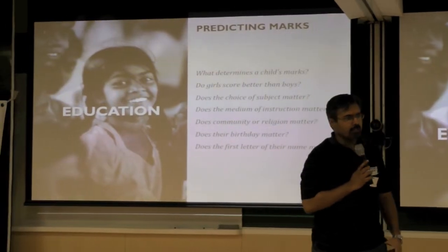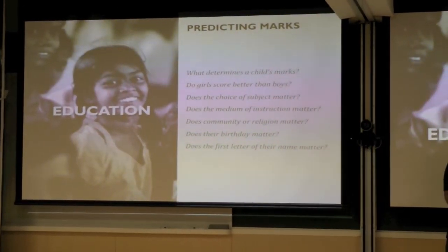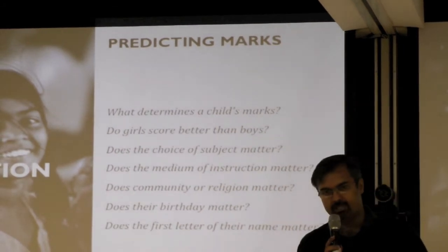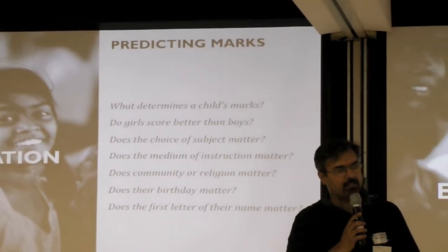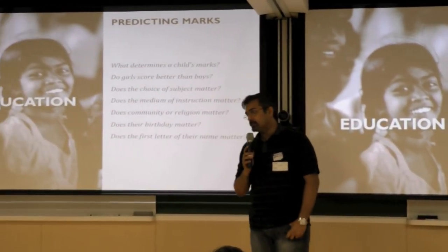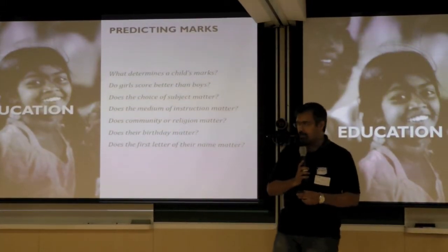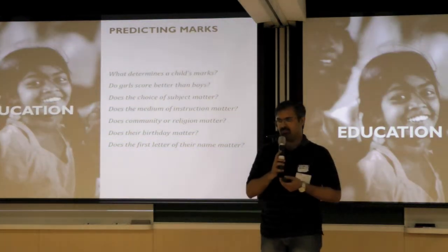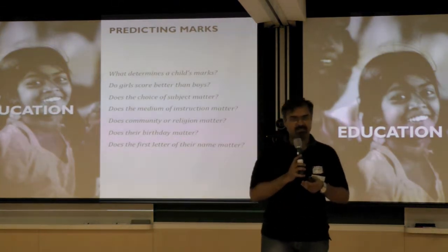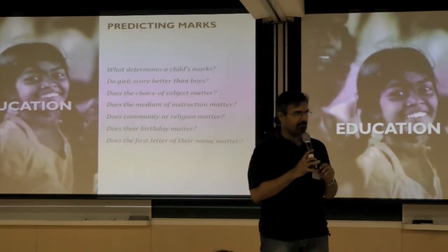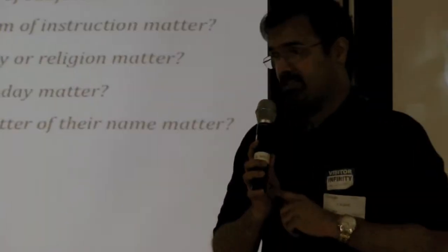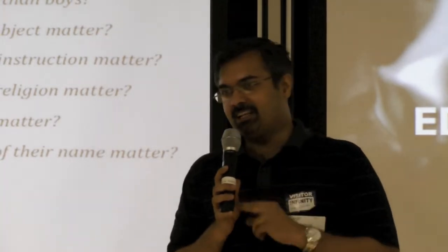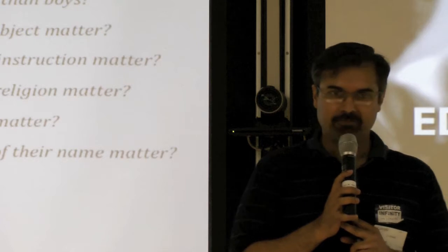We were working with the Tamil Nadu Education Department to see if there was a story around what predicts math scores. Given a child, can we find out upfront what marks they are likely to get, purely based on demographics? Does gender make a difference? Does community make a difference? Does the choice of subject make a difference — and you'd be surprised to find that it makes a massive difference. We were also testing unusual things, like does astrology have significance — do people born in certain months score better in maths? People with different first letters of their name show no statistically significant difference. In 2011, the letter T scored the highest mark, and T scored the lowest, but not statistically significant.